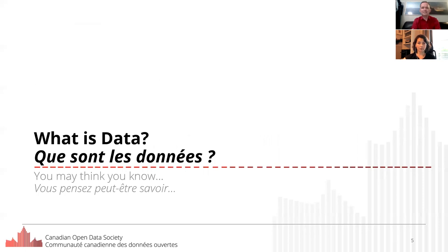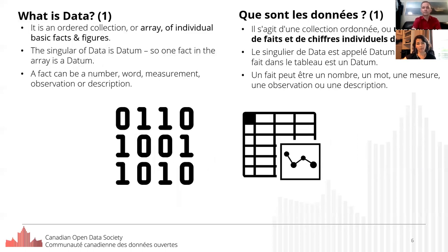But let's review what data is first. We find this useful even for many Open Data supporters and advocates who may work at a policy level. Data is the plural of datum, literally meaning something given. It's an array of single facts and figures, and the facts can be of any type.